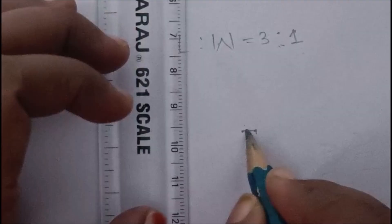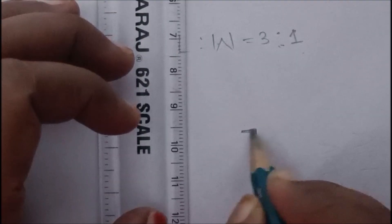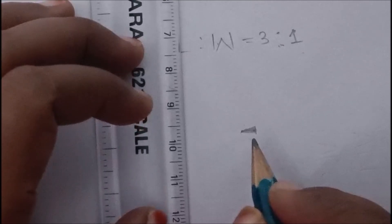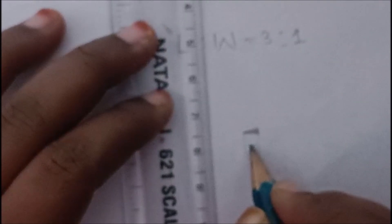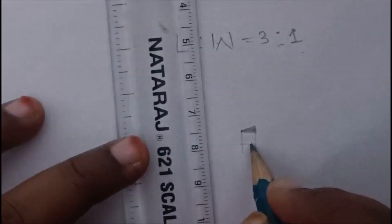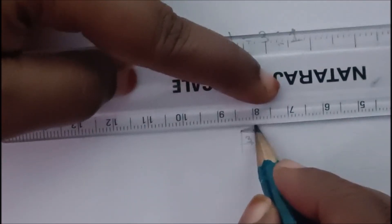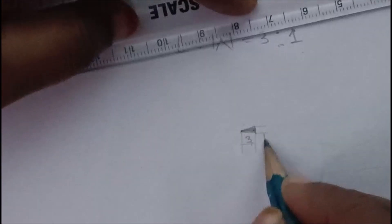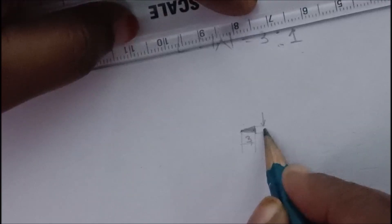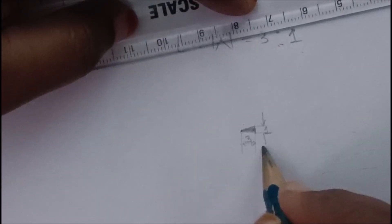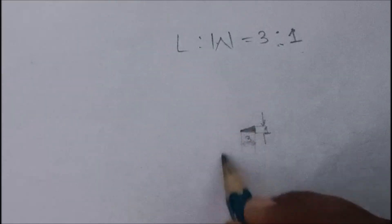And you are going to close this. This is the closed arrow. This is how you are going to draw the arrow. This length is 3 mm and this width should be 1 mm. This should be 3 and this should be 1. This is how we are going to draw the arrows.